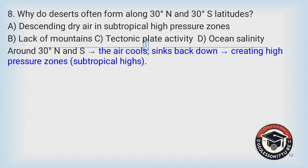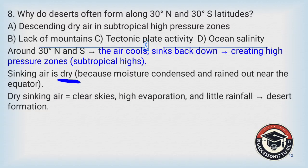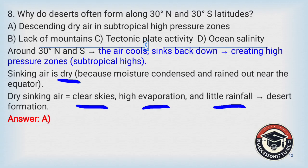Around 30 degrees north and south, the air cools and sinks back down, creating high pressure zones known as subtropical highs. The sinking air becomes dry because moisture condenses and rains out near the equator. As a result, dry sinking air produces clear skies, high evaporation, and little rainfall — leading to desert formation. A is the correct answer: descending dry air in subtropical high pressure zones is the major factor for desert formation at 30 degrees north and south latitudes.